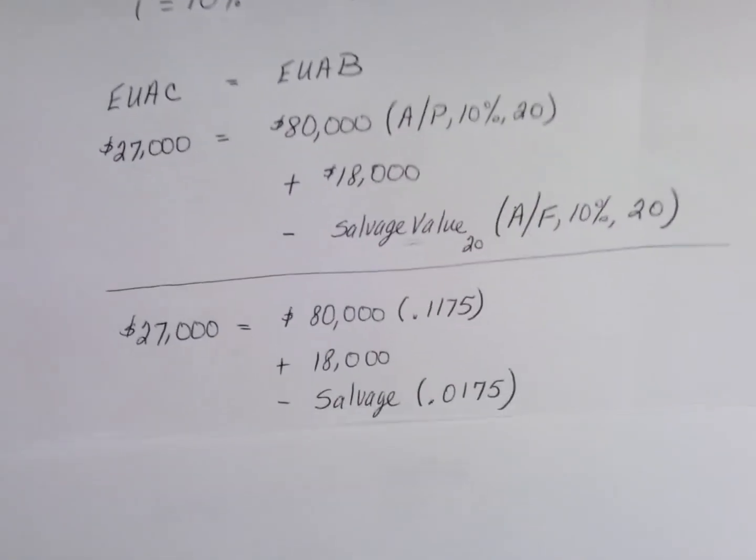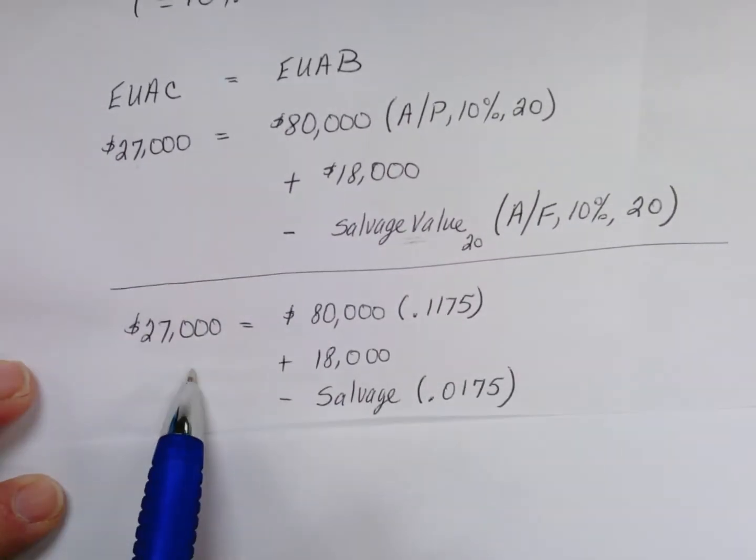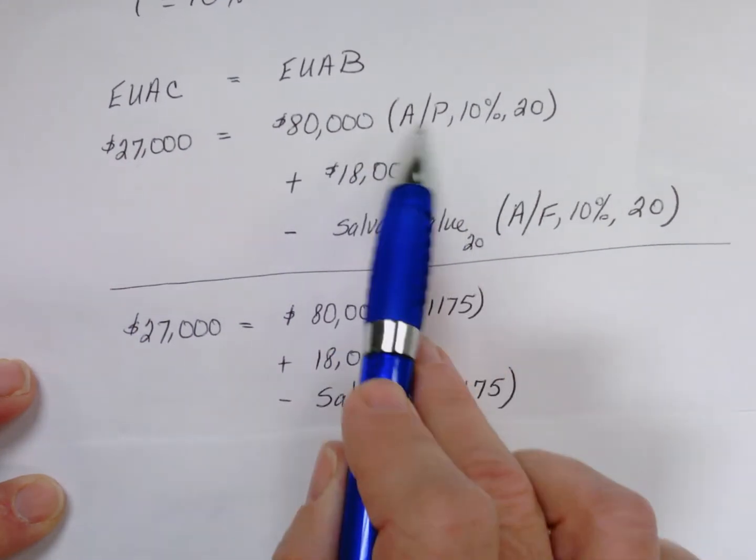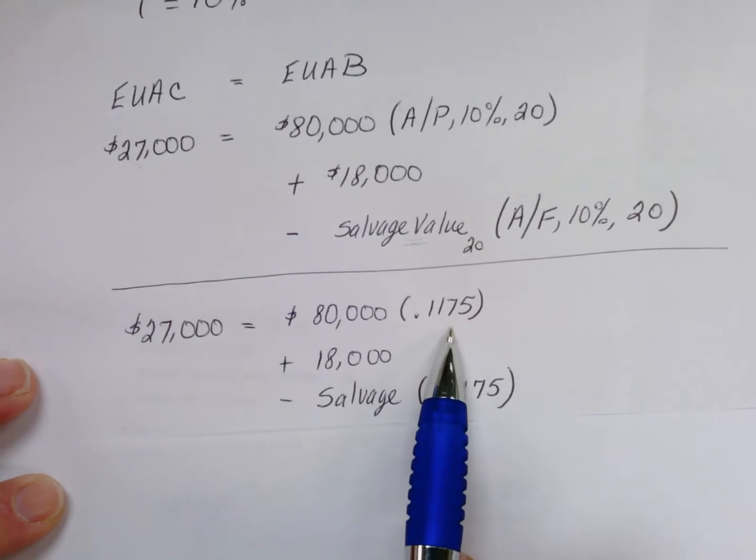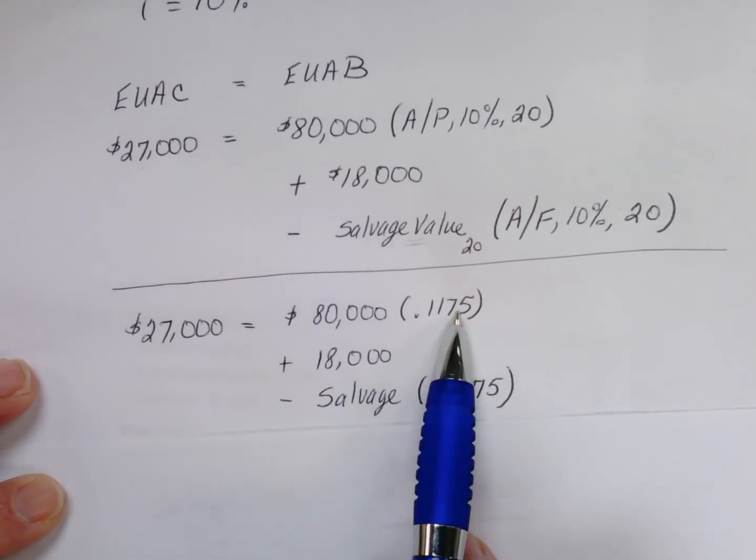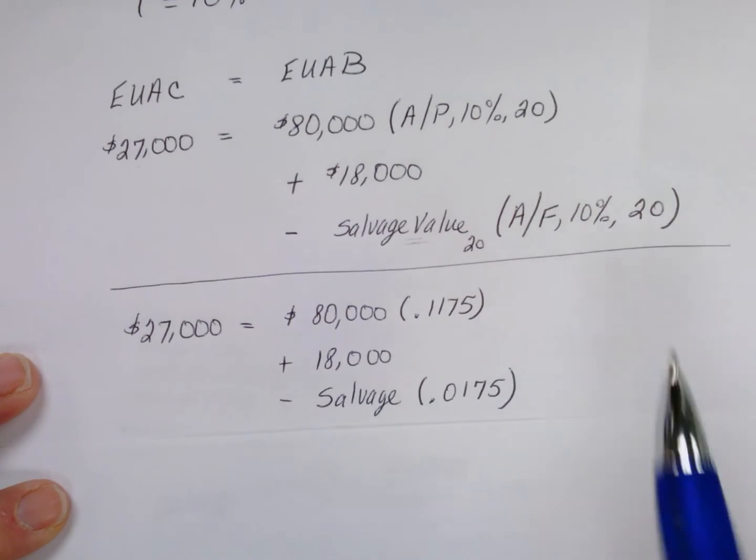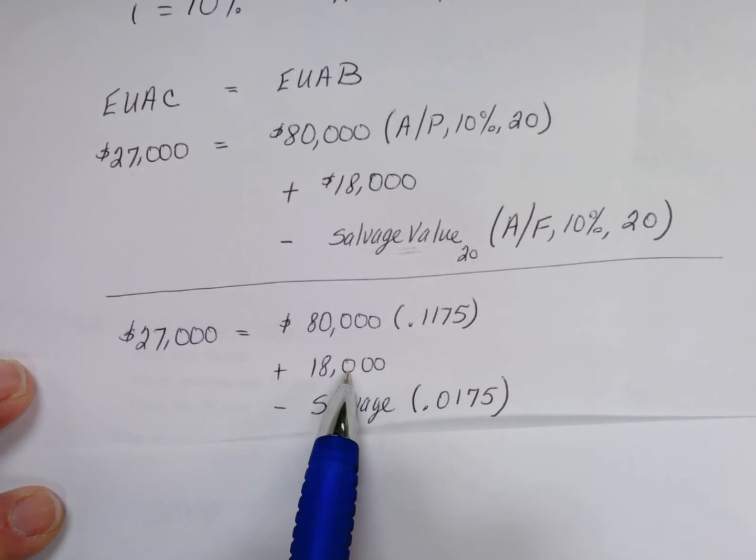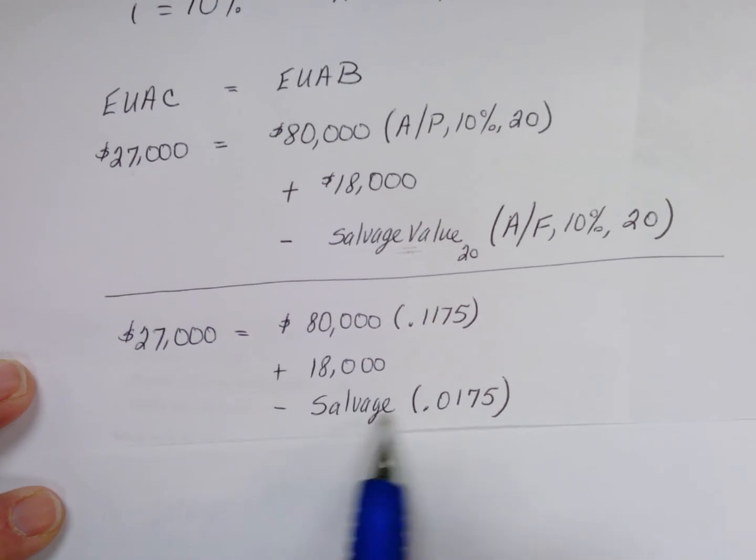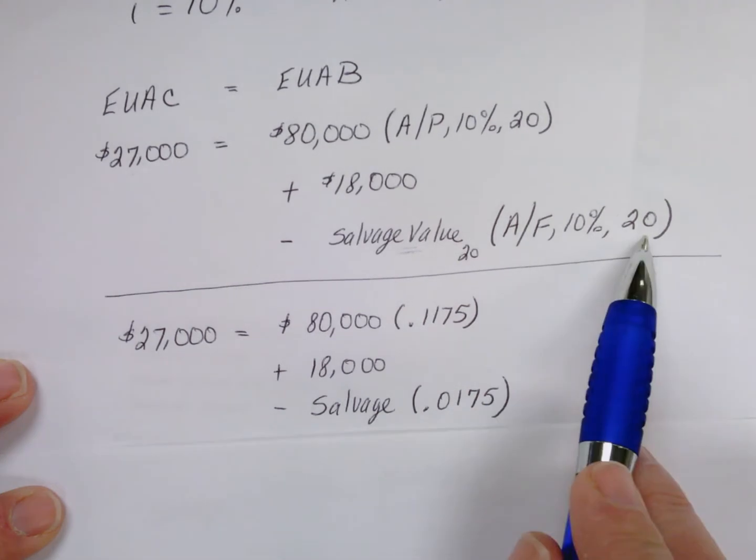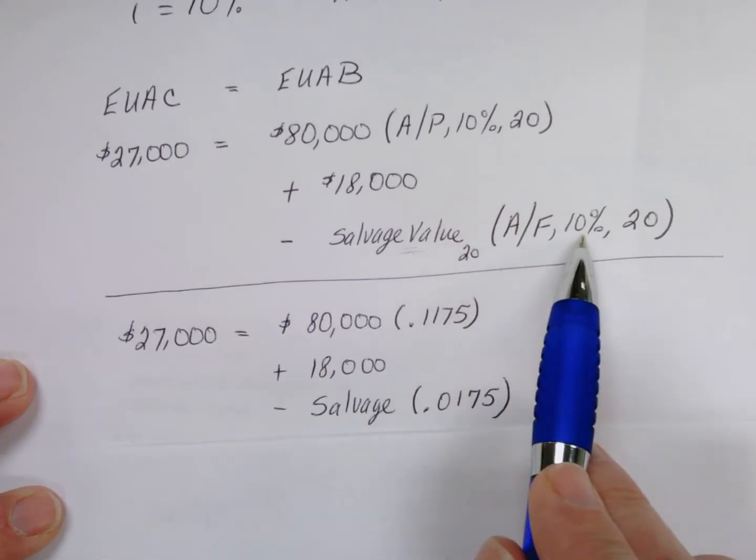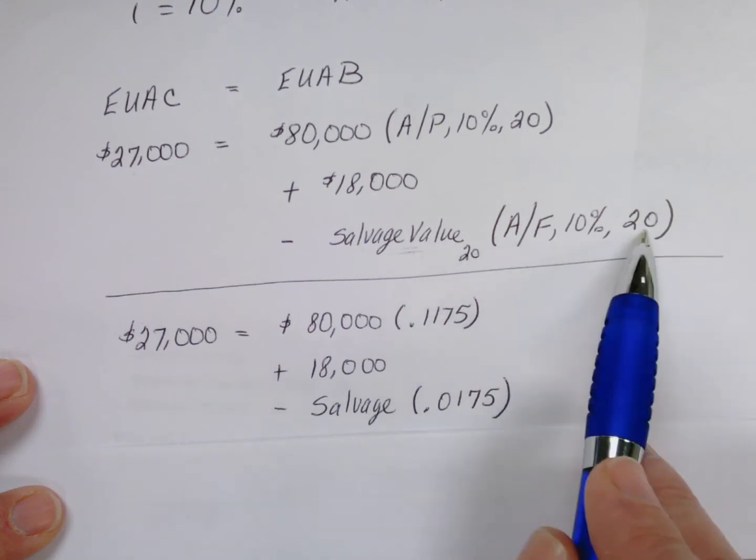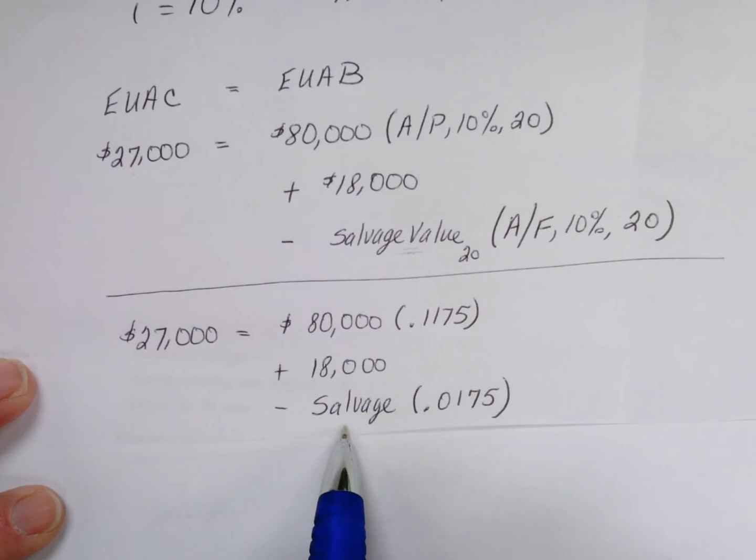So solving for that, we have $27,000 on this side of the equation plus 80,000—go to the interest tables for 10% and find the factor in the A/P column for 20 years and we get 0.1175 as that factor, multiply those together, plus the $18,000 already is in terms of an annuity, equal annual maintenance costs, minus then the salvage value that we're looking for times its factor 0.0175 taken from the 10% interest table in the find A given F column again for 20 years. So there's the factor that we'll multiply the salvage value for—that's what we're looking for.